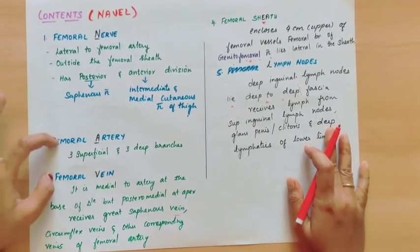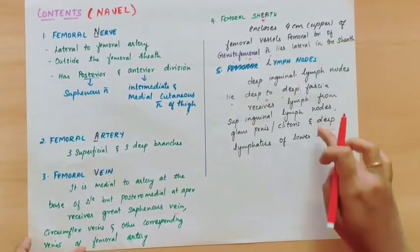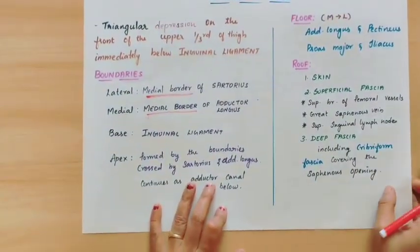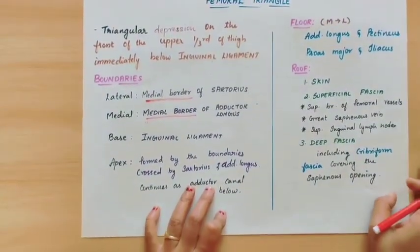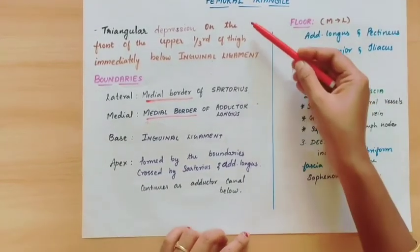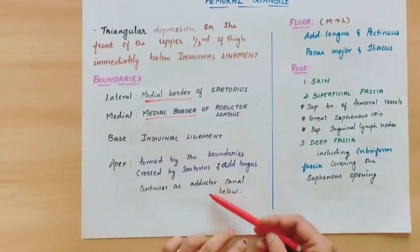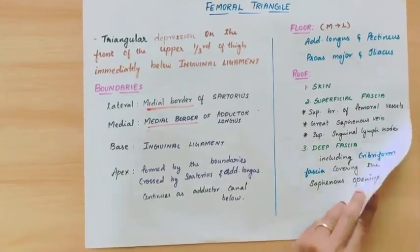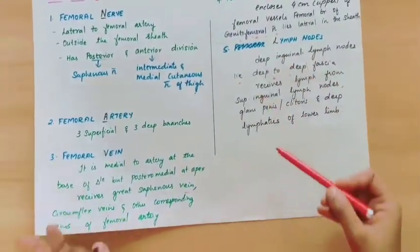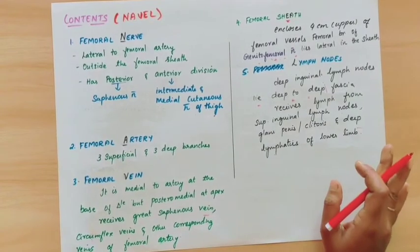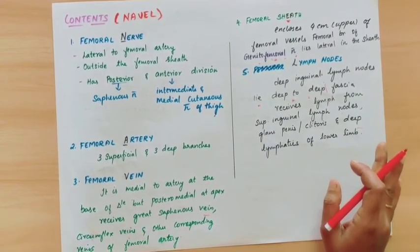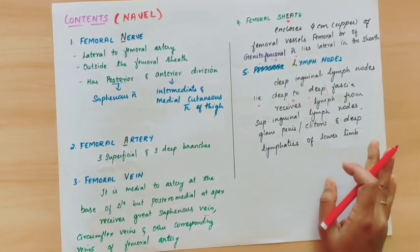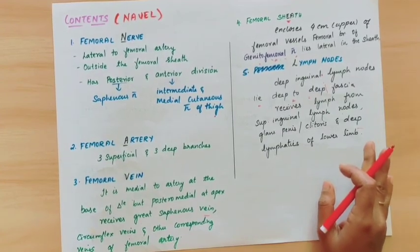To summarize: the contents are femoral nerve, femoral artery, femoral vein, femoral sheath, and lymph nodes. This is all about the femoral triangle, which is one of the most important 5 mark questions. We have seen the introduction, boundaries, floor, roof, and contents of the femoral triangle. Thank you for watching — if you like my work, please like, share, comment and subscribe. If you have any doubts or suggestions, please let me know in the comment section below.